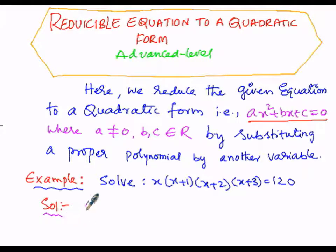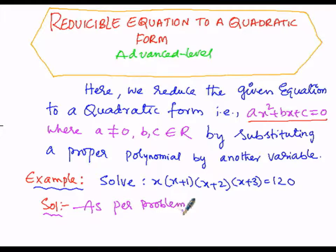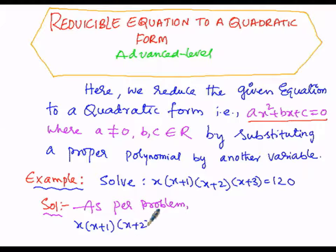As per the problem, the given equation is x(x+1)(x+2)(x+3) = 120.